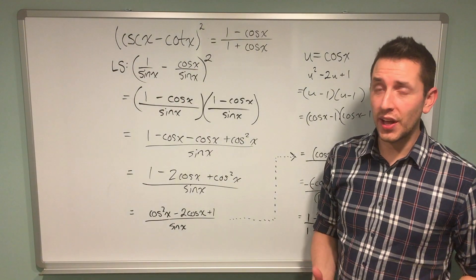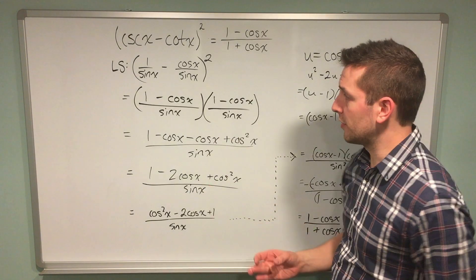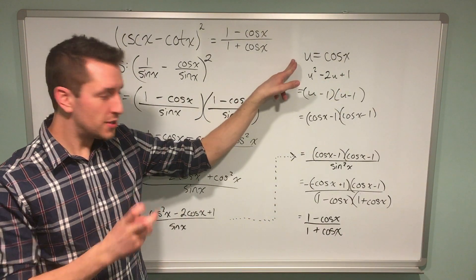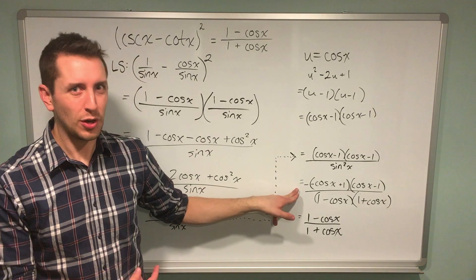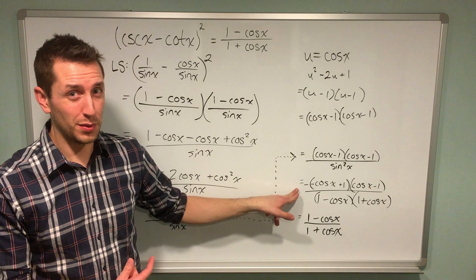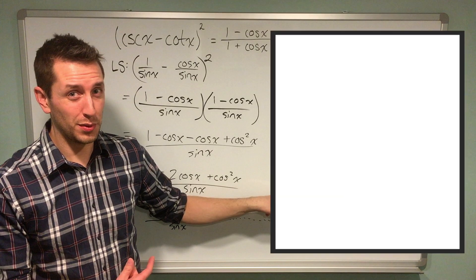So again, at first glance, this trig identity problem doesn't seem that complex. However, our need for u-substitution and this bizarre factoring of a negative really amplify the difficulty. Of course, as a reflective problem solver, I'm looking back at my work and realizing there's a way to solve this problem that doesn't involve that bizarre u-substitution step. I'll walk you through that quickly.